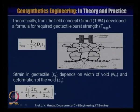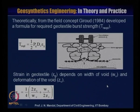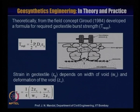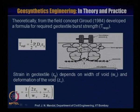Theoretically, from the field concept (1984), a formula for required geotextile burst strain is: T_required = 0.5 × P_g × d_b × ε_g, where P_g is the applied pressure, d_b is the relevant diameter, and ε_g is the strain.